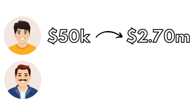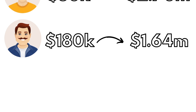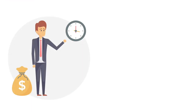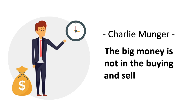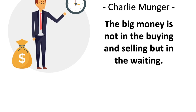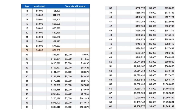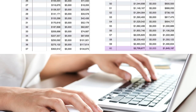And even for person two, $180,000 turned into $1.64 million, which is still impressive. This is because time is your friend when investing. Charlie Munger has famously said that the big money is not in the buying and selling, but in the waiting. And here it is in the table from the Barefoot Investor book — it shows where person one stops investing and where person two starts investing, and the final amounts at age 60.